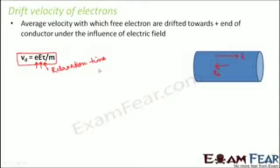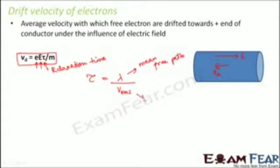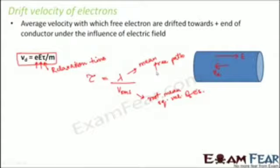The time interval between two successive collisions of electrons with positive ions is called relaxation time. Relaxation time tau is equal to lambda divided by Vrms, where lambda refers to the mean free path of electrons and Vrms refers to the root mean square velocity of electrons. Mean free path is the average distance traveled by an electron between two successive collisions.